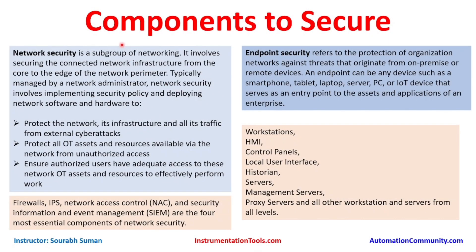These are some major components we need to secure in an industrial environment. This is split into two parts: network security and endpoint security. Network security is a subgroup of networking, and when we do networking we need to take care of network security as well. It involves securing the connected network infrastructure from the core to the edge of the network perimeter — from network switches at level zero or level one up to level four and level five.